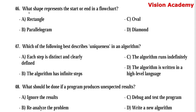Question number 46: What shape represents the start or end in a flowchart? Option A, rectangle. Option B, parallelogram. Option C, oval. Option D, diamond. Here, option C, oval, is the right answer.